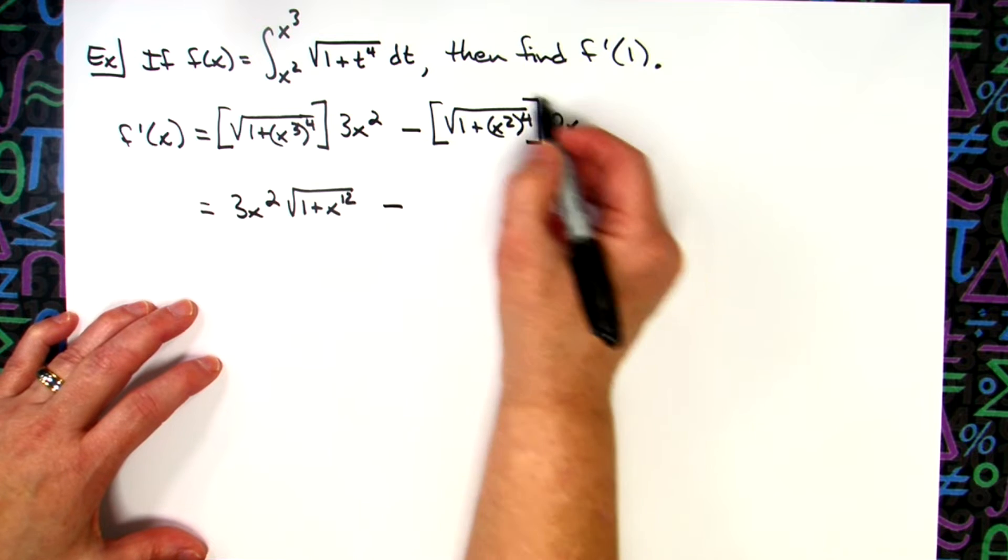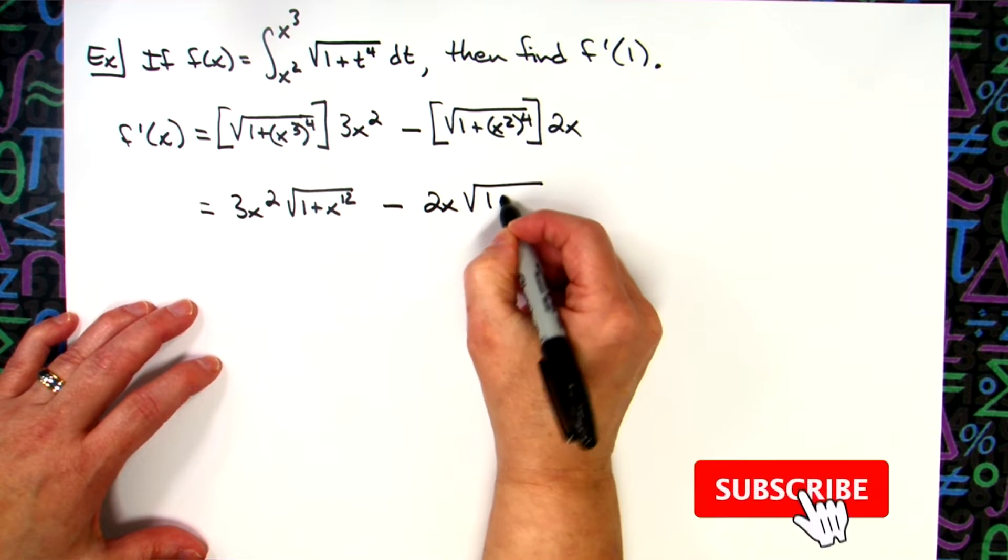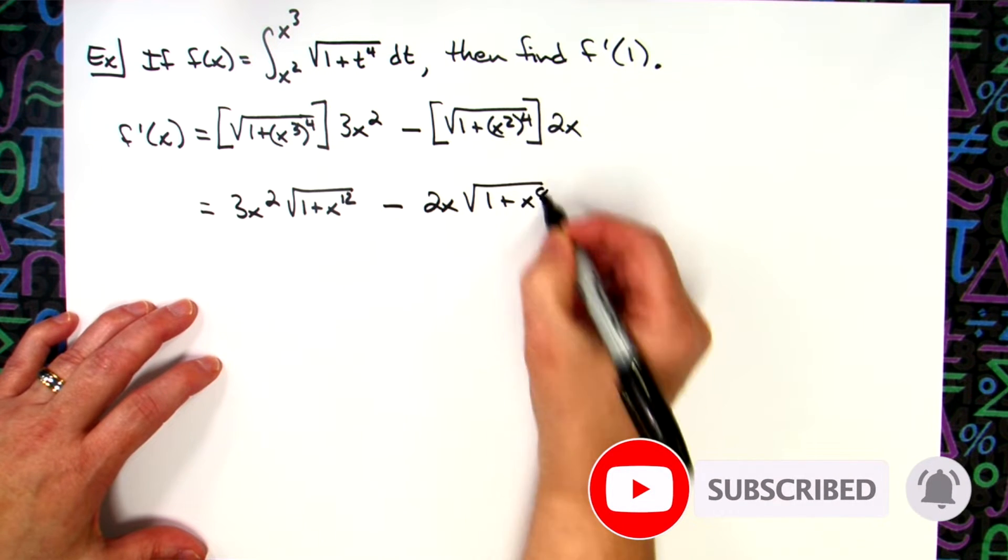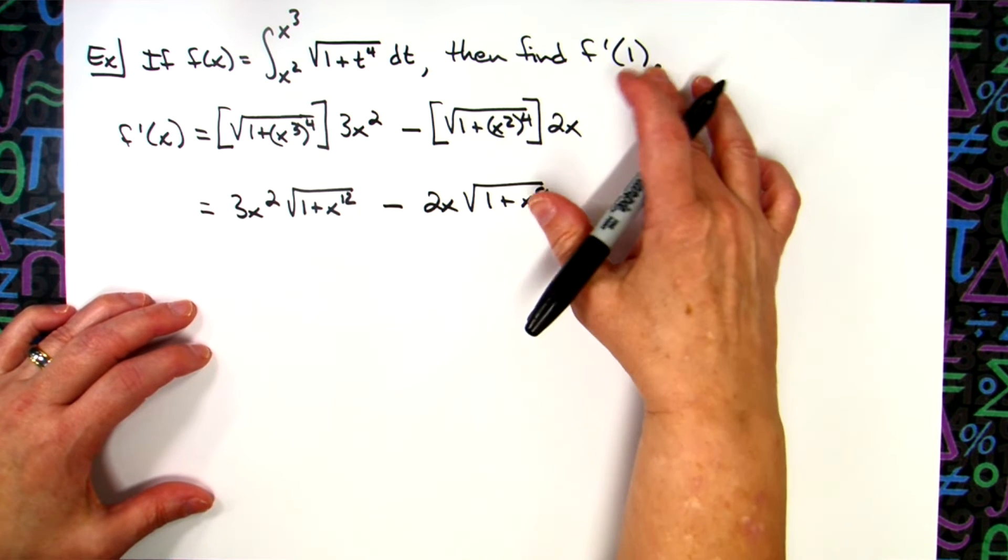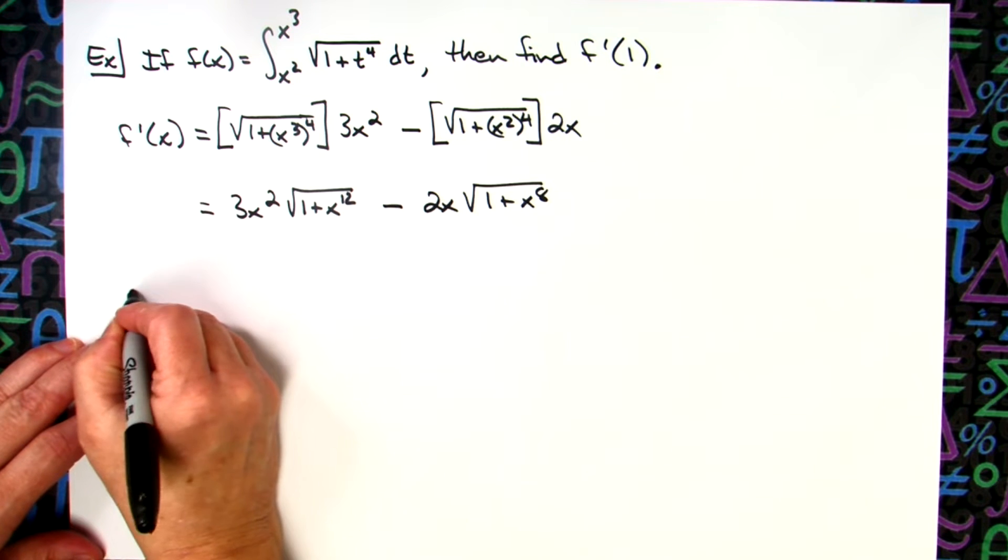And then minus, let's just move that 2x in front, square root of 1 plus, power raised to power, multiplying there, x to the eighth. And really how far you simplify there, because ultimately we're trying to find the derivative at 1. We have an expression there that we can plug one into now.